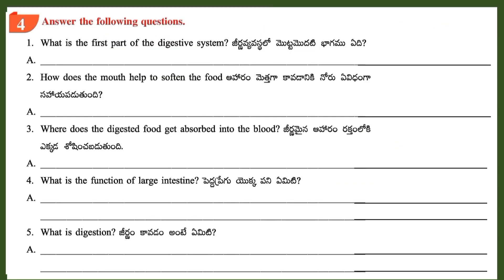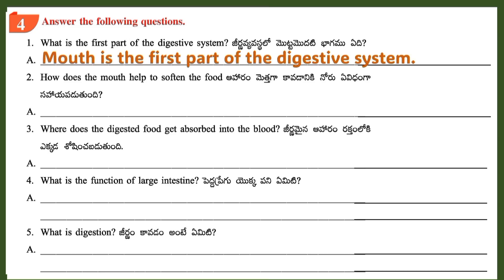Section 4: Answer the following questions. Question 1: What is the first part of the digestive system? Answer: Mouth is the first part of the digestive system.